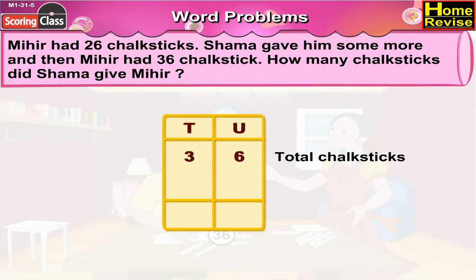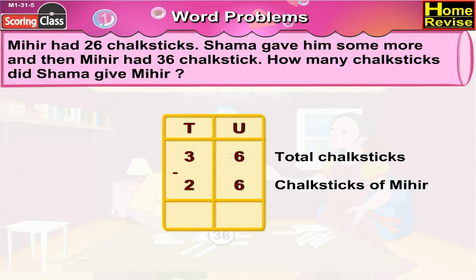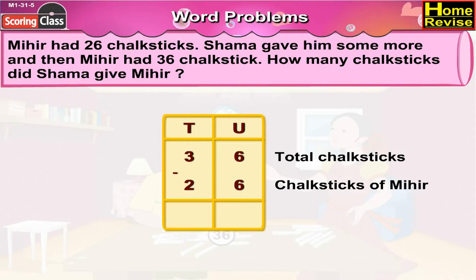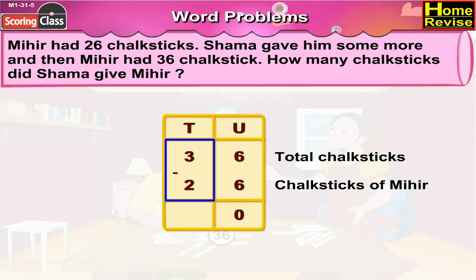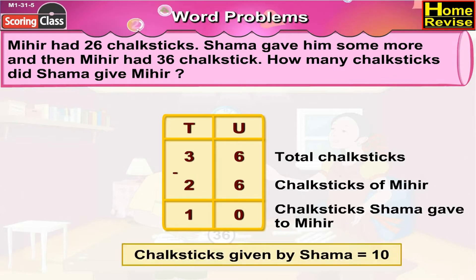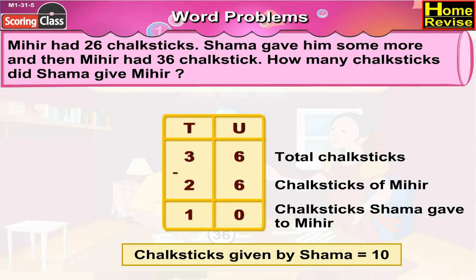That is 36 minus 26. Let us arrange it. Under units we have 6 minus 6, that is 0. Under tens we have 3 minus 2, that is 1. So, the number of chalk sticks Shama gave to Mihir are 10.